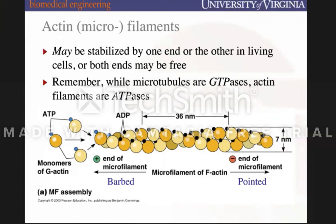You'll also see actin filament ends labeled as barbed and pointed. This is an antiquated way of referring to the ends of actin filaments — originally dubbed that way because under an electron microscope one end looked pointed and one looked barbed. Now we have better nomenclature to describe them as the negative and positive ends of the actin filament.